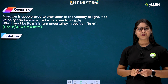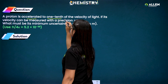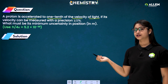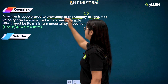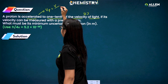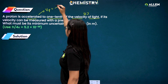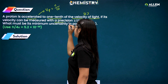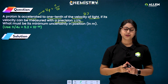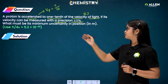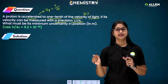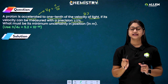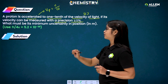The first question: a proton is accelerated to one tenth of the velocity of light. So the velocity of the proton is c/10. If this velocity can be measured with a precision of plus or minus one percent, we can find the uncertainty in the measurement of velocity, Δv, by taking one percent of the proton's velocity.